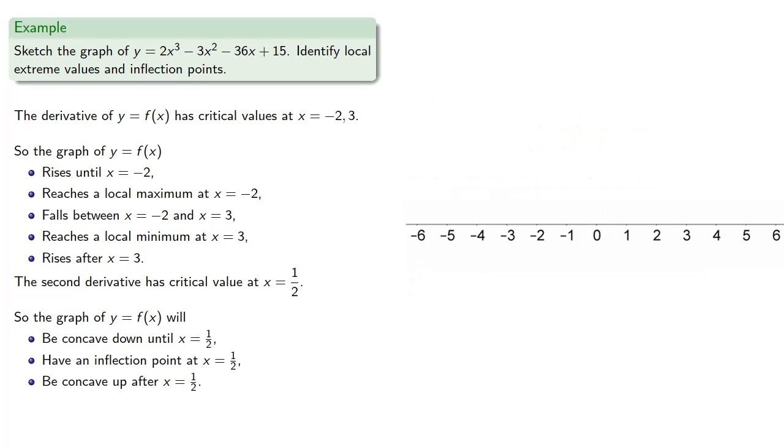And this allows us to sketch the graph. So remember, the skeleton of the graph is based on the first derivative information. We rise until x equals negative 2, we fall until x equals 3, and then we rise again. Then we can add some flesh to the graph. We're concave down until we hit x equals 1 half, and then concave up afterwards.